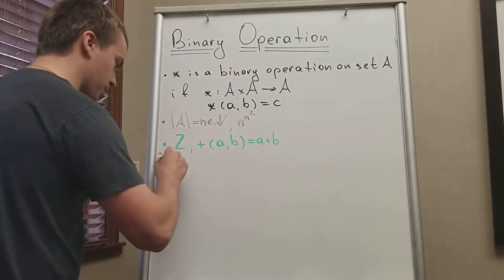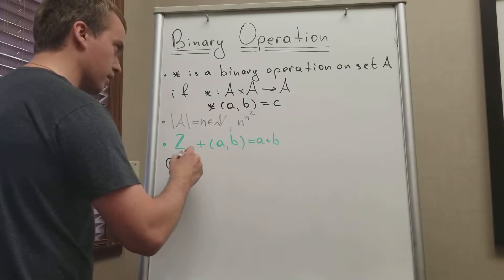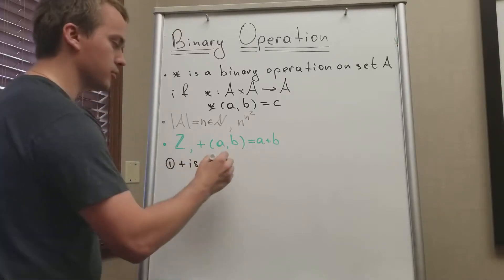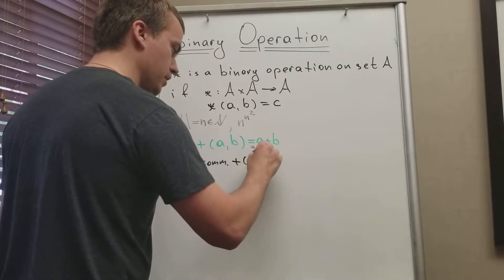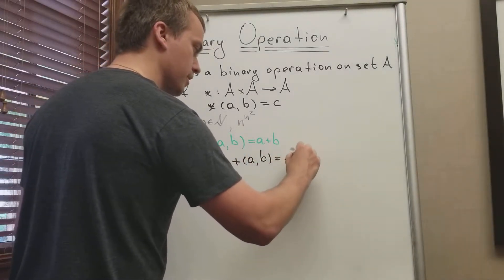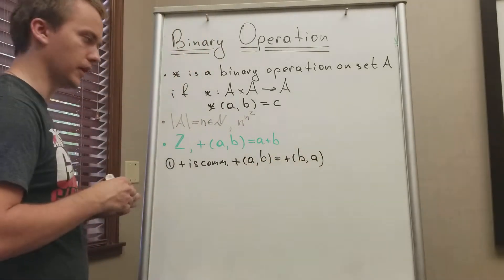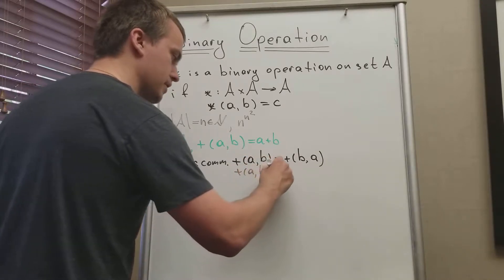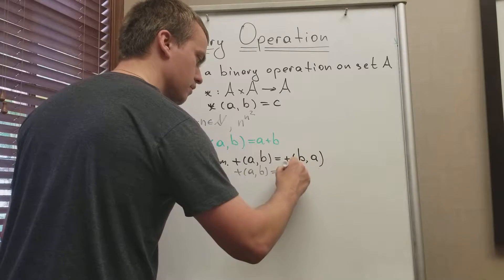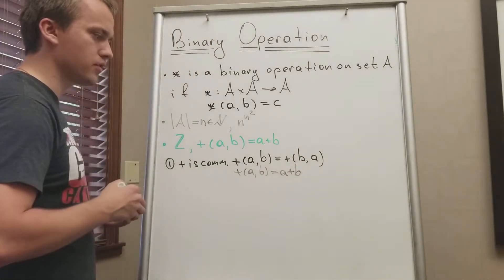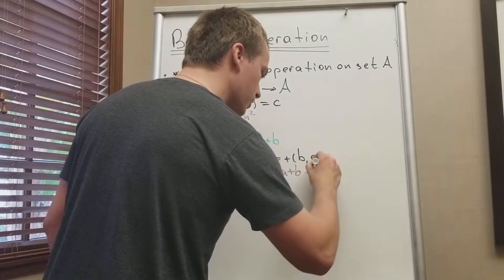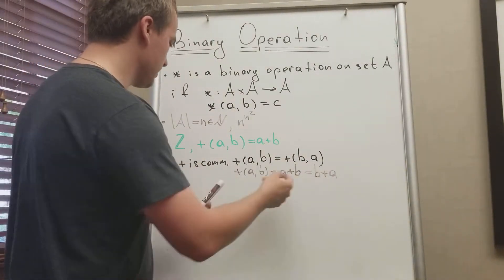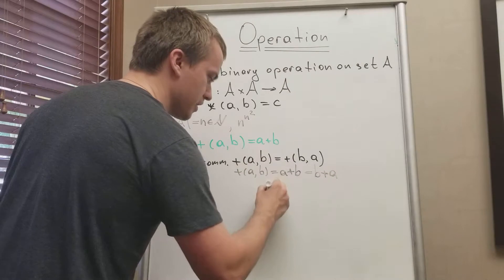The first property: plus is commutative. The binary operation is commutative because the operation of A and B equals the operation of B and A. This is true because the operation of A and B equals A plus B, and by using certain arguments we can write this as B plus A.